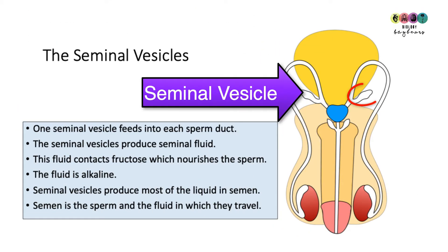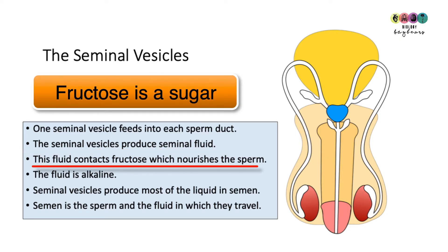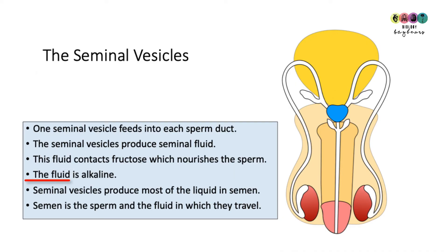The seminal vesicles are a pair of glands that feed into each sperm duct. They produce a liquid known as seminal fluid, and this liquid contains the sugar fructose which nourishes the sperm — really important. The fluid is alkaline, and the seminal vesicles produce most of the liquid found in semen.